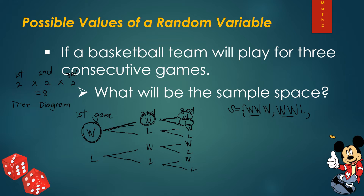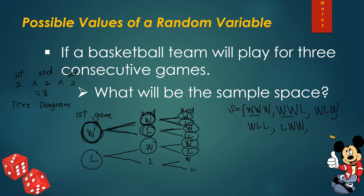Completing the remaining branches: we have W-L-W, W-L-L, then moving to the first-game loss branch — L-W-W, L-W-L, then L-L-W, and finally L-L-L. We check and confirm all eight outcomes are listed.